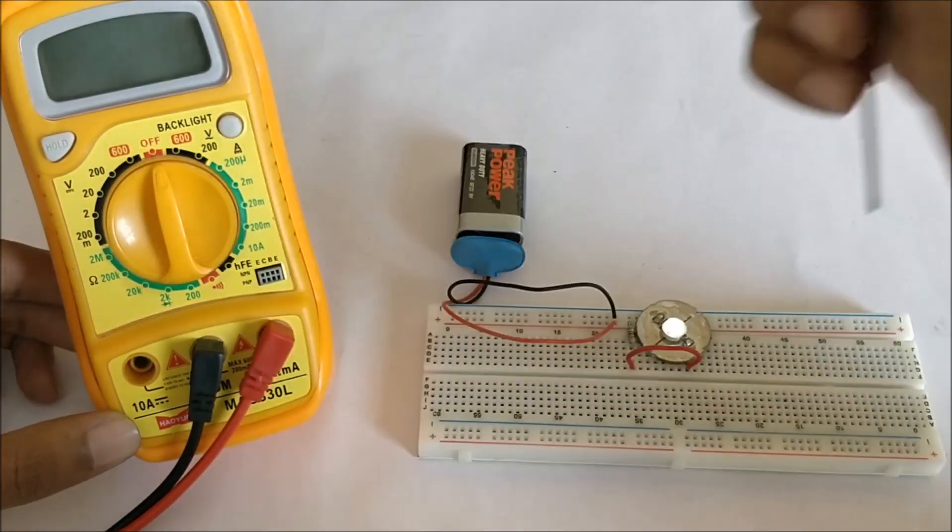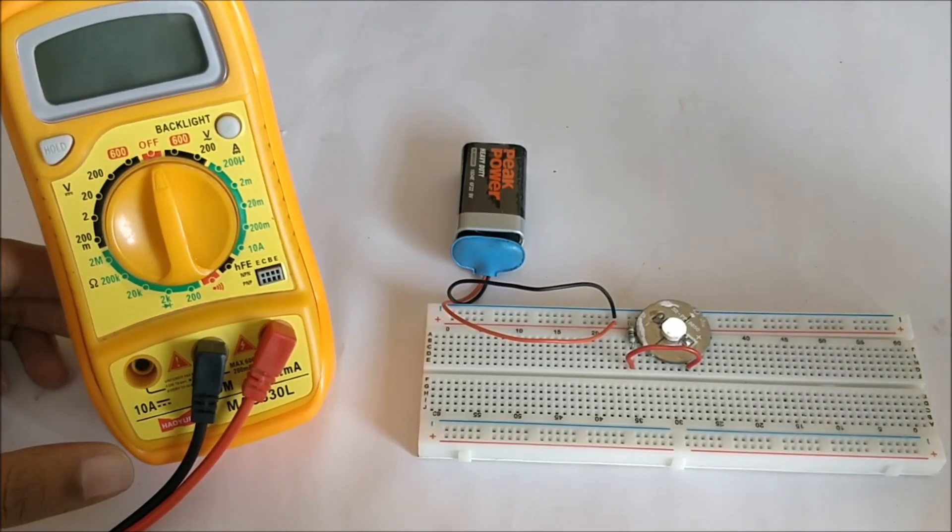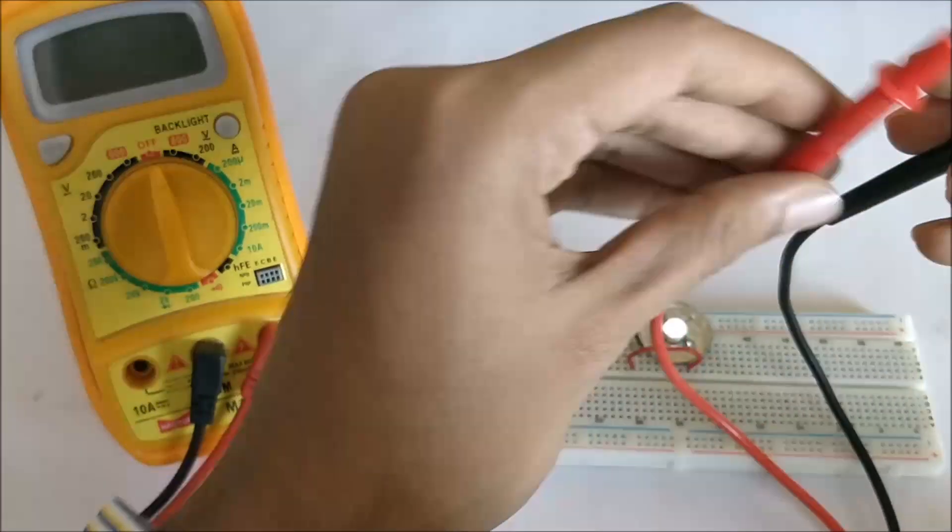Since the current here that we are measuring is very small, we are using the slot that is to our right side. But do note, when you are measuring a higher current device, you have to use the slot that is to your left side. Otherwise it would cause a fuse failure in your multimeter.